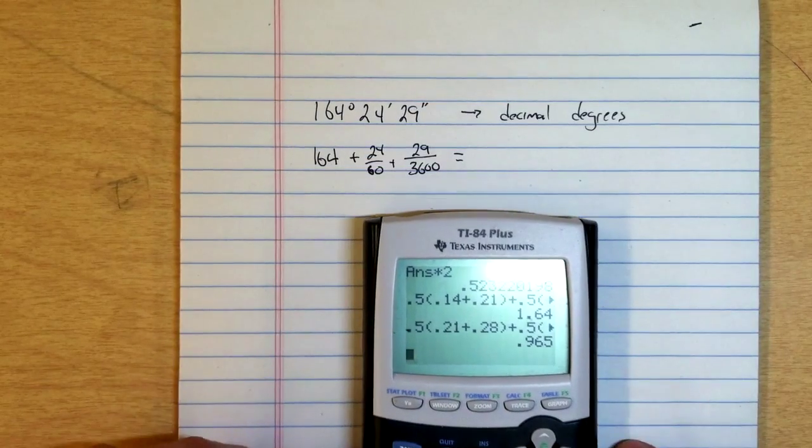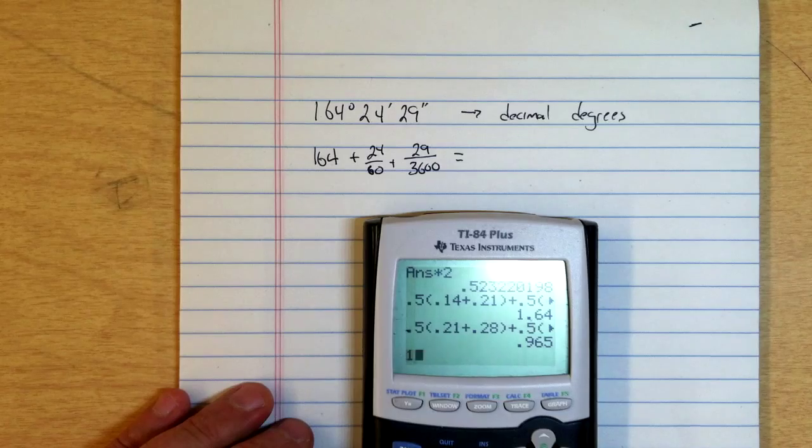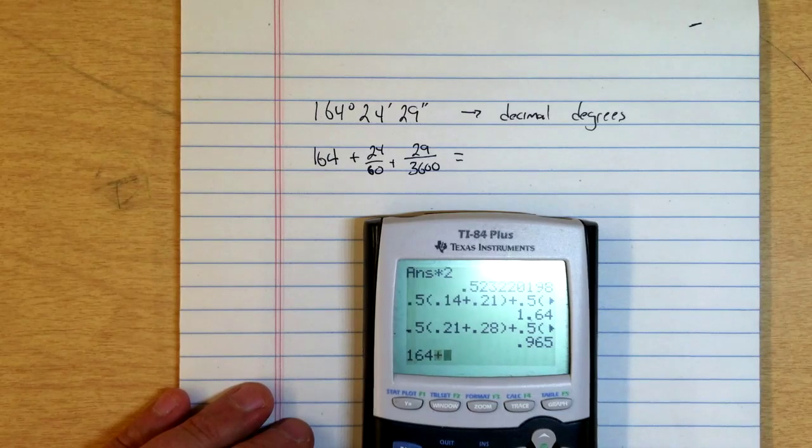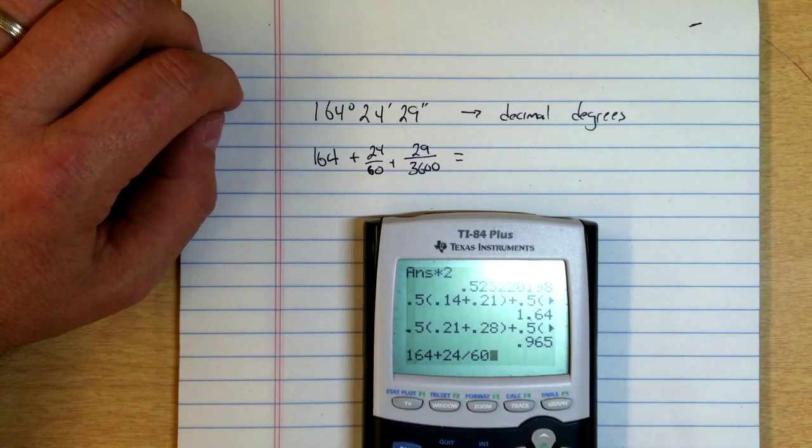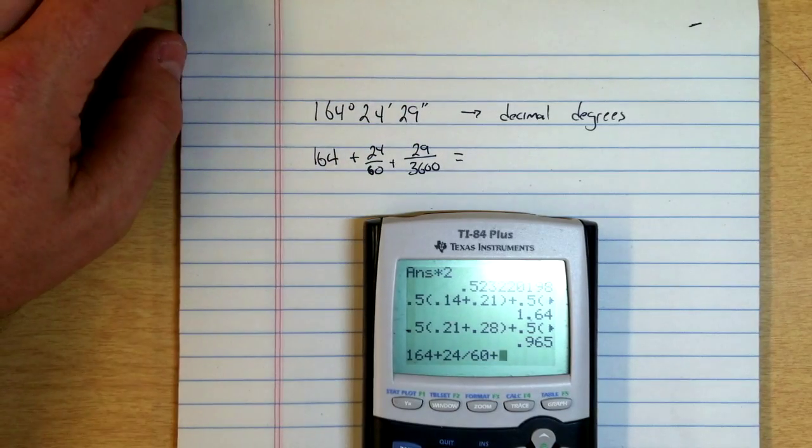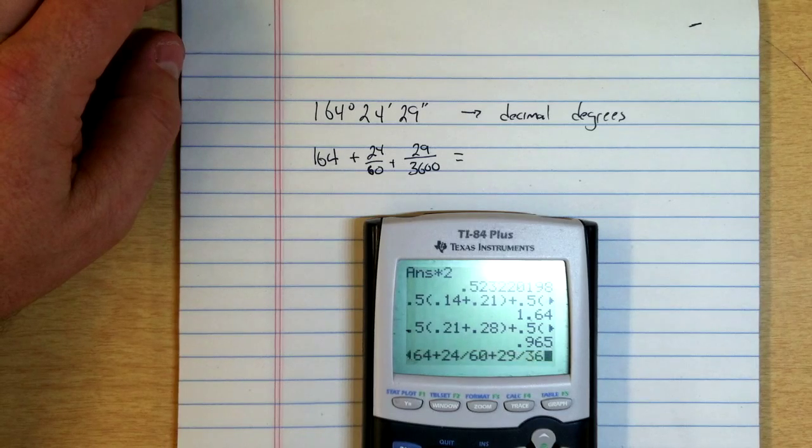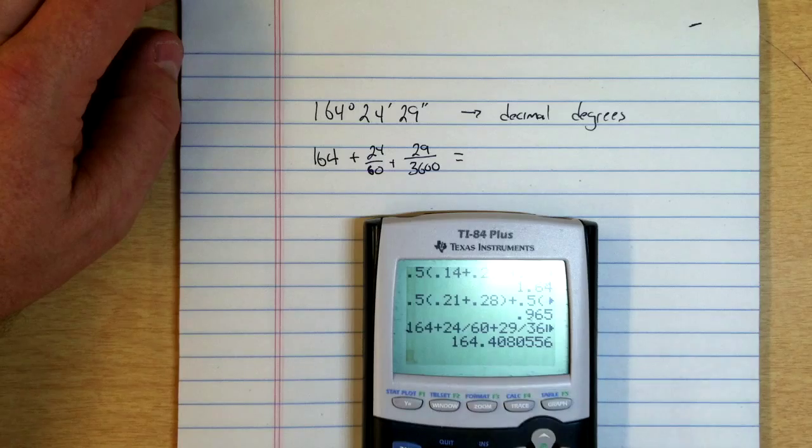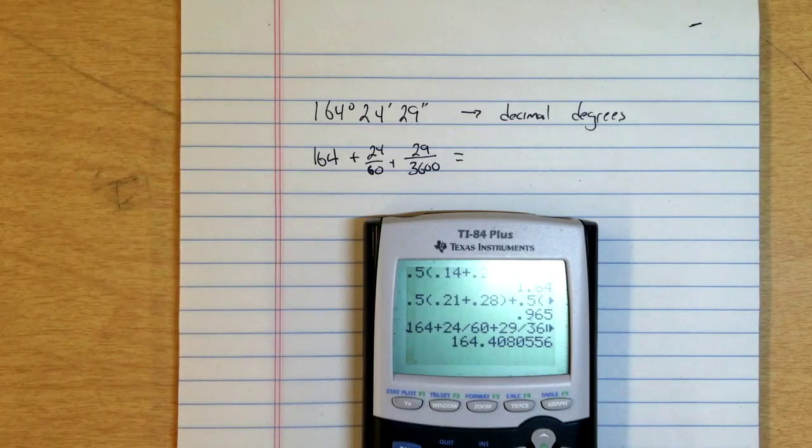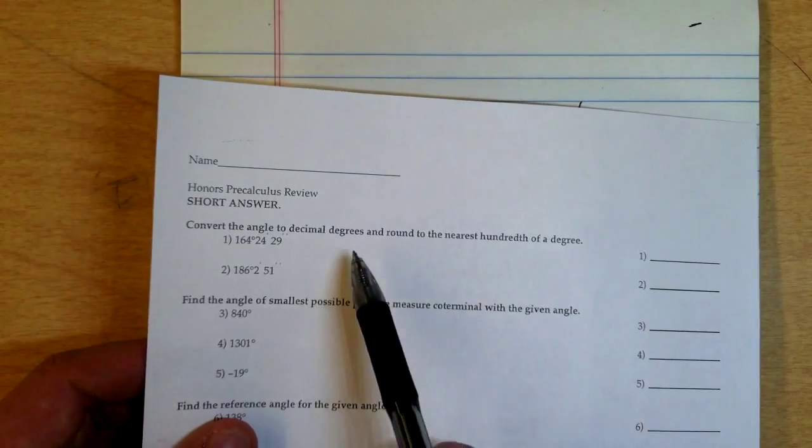We're going to enter 164 plus 24 divided by 60, plus 29 divided by 3600. We hit enter and get 164.408.